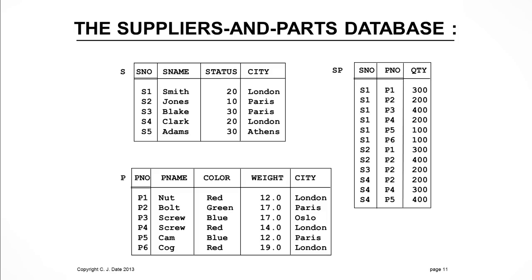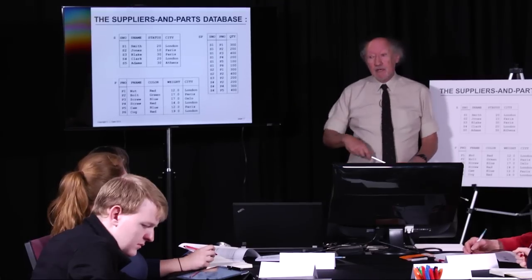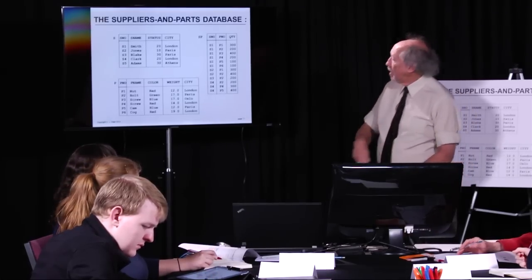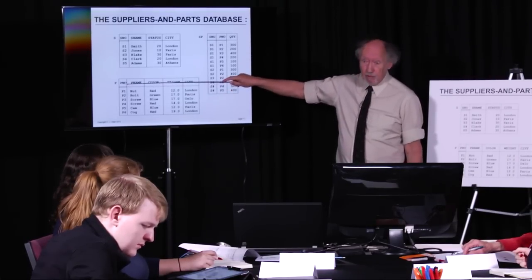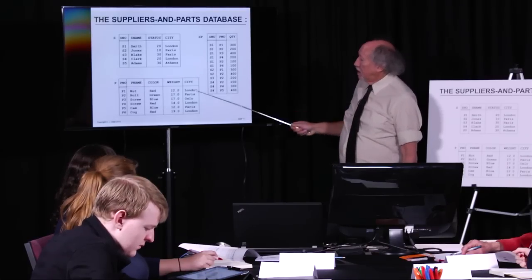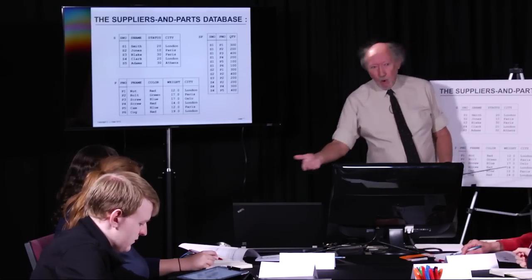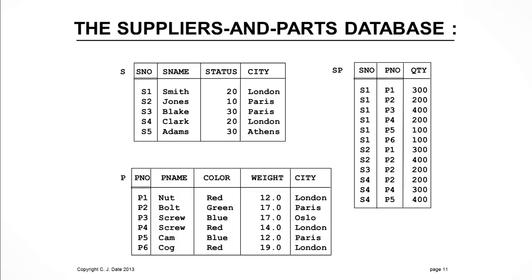For example, right now supplier S1 is shipping Part P1 in the quantity 300. We have five suppliers. Each supplier has a supplier number which identifies that particular supplier, a name, a status value — which you can think of as a measure of how reliable this supplier is — and a city. For the sake of the example, I assume that each supplier is in just one city. Then we have six parts. Each part has a part number, a name, a color, a weight, and the city where parts of that kind are stored.